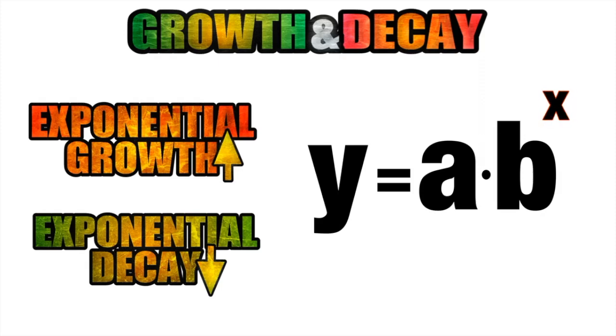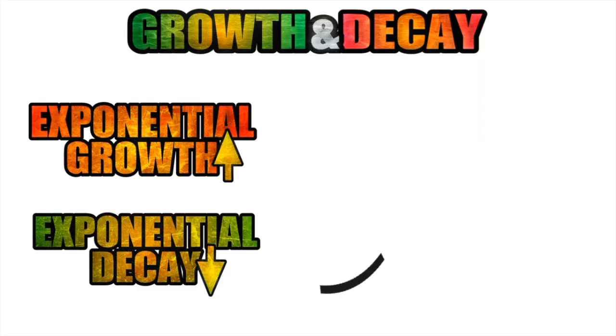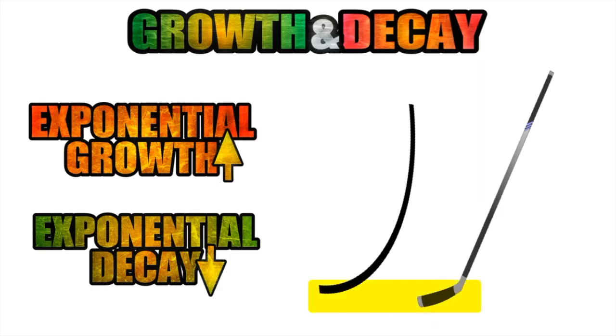Now when we graph an exponential growth equation, our graph is going to be a curve that often resembles a hockey stick where the initial growth is slow and almost linear, but quickly becomes extremely rapid and exponential.